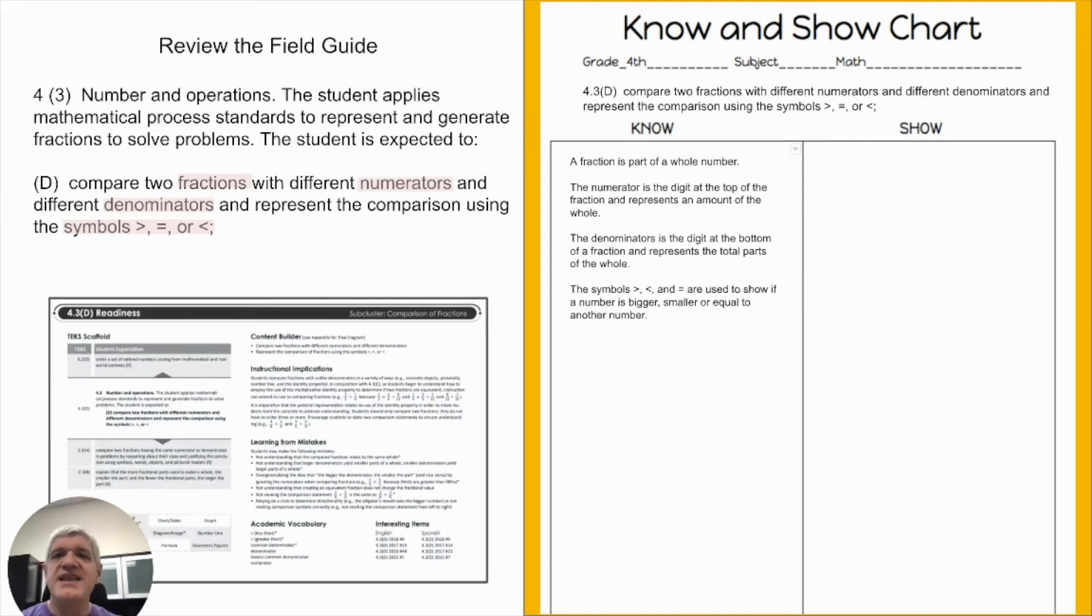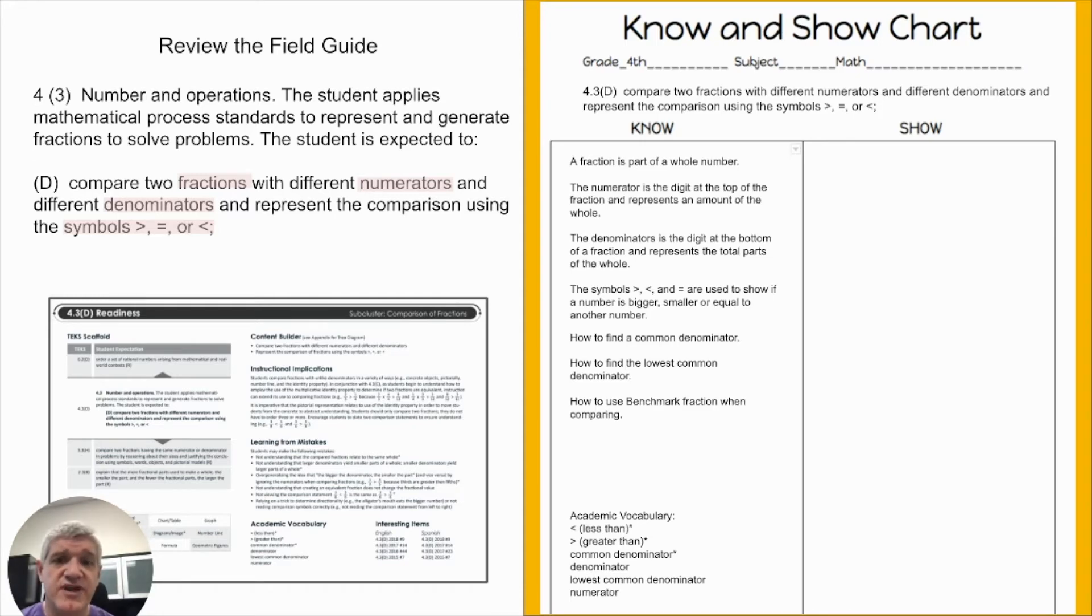Next I'm moving to my Field Guide. My Field Guide is going to add to that information. In my Field Guide, I find that students also need to know how to find the common denominator and how to find the lowest common denominator. The Field Guide helps me understand that, and then also how to use benchmark fractions when comparing fractions. I get all of that from my Field Guide. Then there's vocabulary that I need to make sure I include while I'm teaching this lesson.